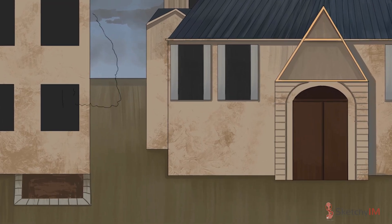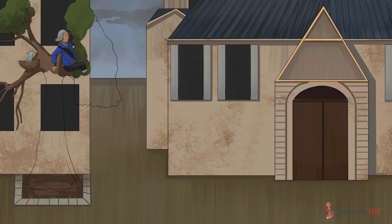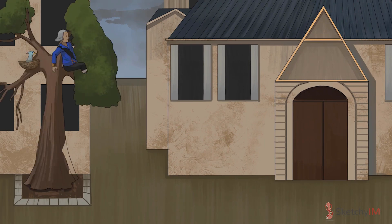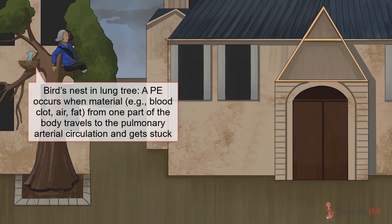A pulmonary embolism occurs when material from one part of the body travels to the pulmonary arterial circulation and gets stuck there. At Sketchy, PE is represented by our recurring symbol: the bird's nest stuck in that lung-shaped tree. Notice how part of the tree distal to the nest is dead.